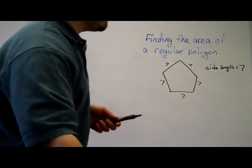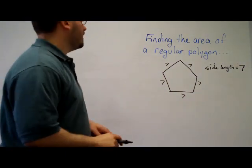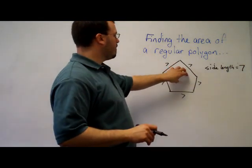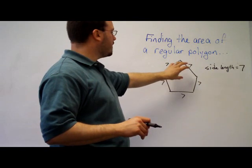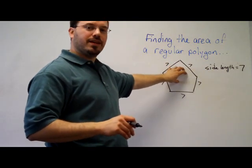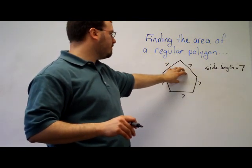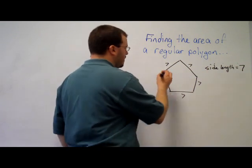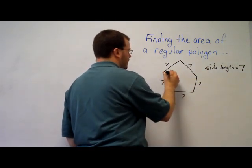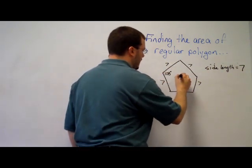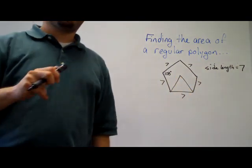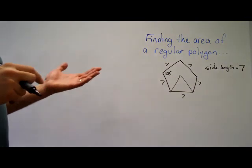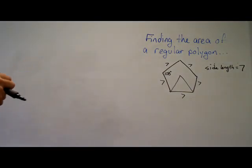We also know, since it's a regular polygon, that all the angles are congruent. And from a previous video, if you're unsure about this next part, you can look in there and find it. But the sum of the interior angles of a pentagon is 540 degrees, which means that each interior angle is going to be 108 degrees.